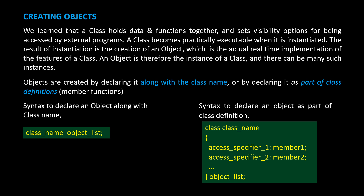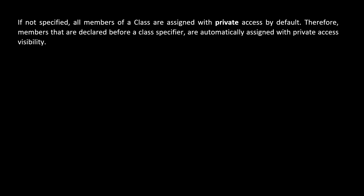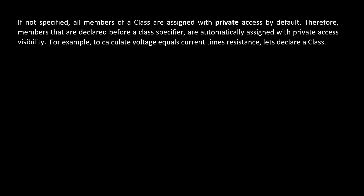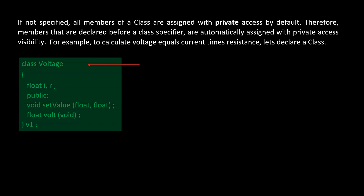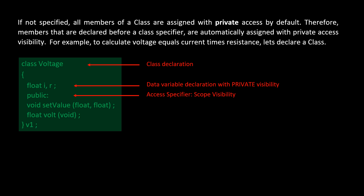We will now look at an example. Remember that if not specified, all members of a class are assigned with private access by default. Therefore, members declared before an access specifier are automatically assigned private visibility. For example, to calculate voltage equals current times resistance, we declare a class. The data variable declaration has private visibility, and the access specifier 'public' declares that all data and functions written below it will have public access.